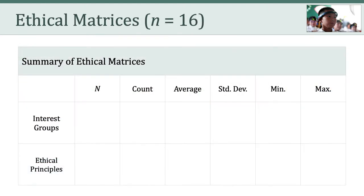To do that, I started by creating simple four-number summaries of the matrices, rows and columns. In terms of interest groups, your matrices had a total of 71 interest groups altogether. This averages out to 4.73 rows, or interest groups, per matrix, with a standard deviation of 1.28.